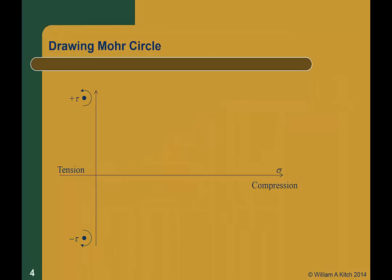The Mohr's circle is a graphical representation of the stress at a point in a solid. It's drawn on a graph where the x-axis represents normal stress and the y-axis represents shear stress. In geotechnical engineering, we define compression to be positive because soils are generally in compression. This is opposite of the sign convention in most other disciplines of engineering, which assume tension is positive — and it's just one of the many ways in which geotechnical engineers are special.